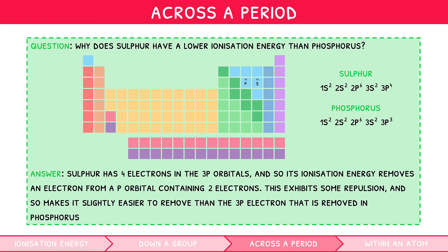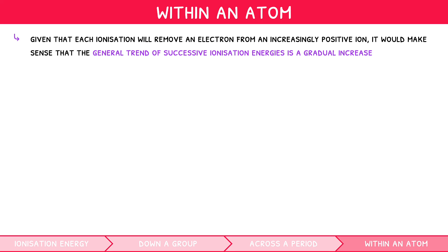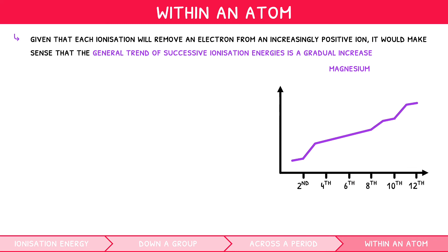You now know that ionization energy decreases down a group and increases across a period. But what about successive ionization energies within a single atom? Given that each ionization removes an electron from an increasingly positive ion, the general trend of successive ionization energies is a gradual increase. For magnesium, it is useful to first write out the full electronic configuration: 1s2, 2s2, 2p6, 3s2.